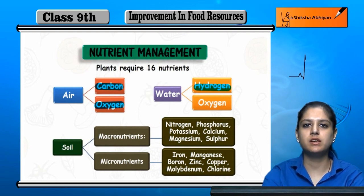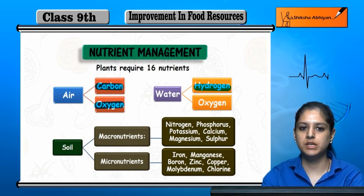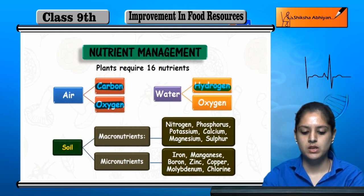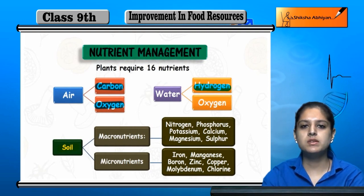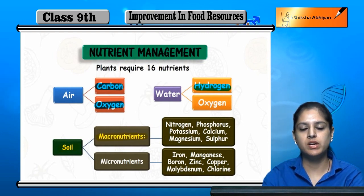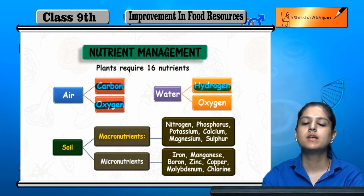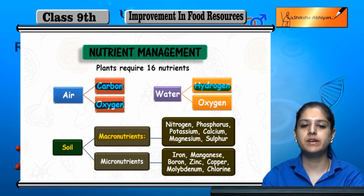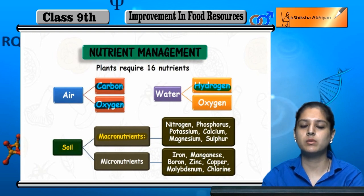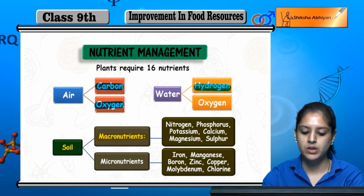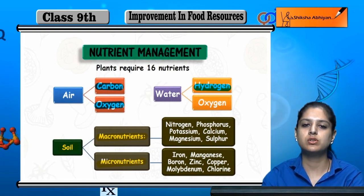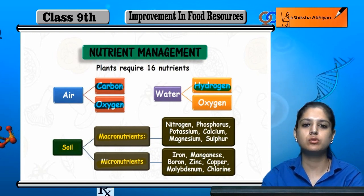In the 16 total nutrients, 13 nutrients come from soil. Soil has two types of nutrients: 1. Macronutrients, which means plants need them in more quantity. 2. Micronutrients, which are required in relatively smaller quantities.